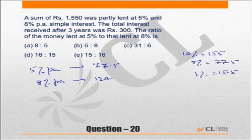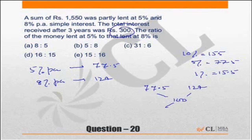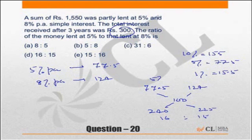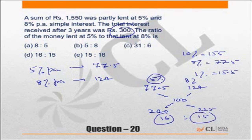When you mix interest of ₹77.5 with interest of ₹124, the average interest received is ₹100 per year. The allegation ratio is 24:22.5, which is 240:225, simplifying to 16:15. So the ratio of amounts at 5% to 8% is 16:15. If the question asks for the actual amount lent at 5%, it is 16/31 × 1550.